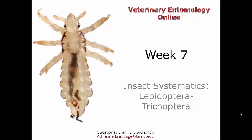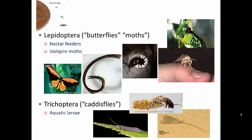We are going to end our investigation into insect systematics with these last two orders: the Lepidoptera and the Trichoptera. So the Lepidoptera are commonly known as the butterflies and the moths. Lepido comes from the word for scale, and ptera means wings.